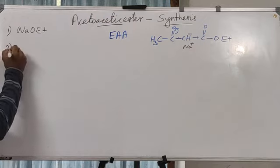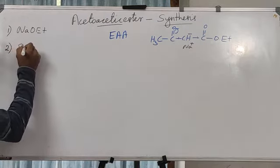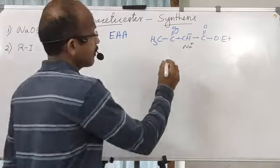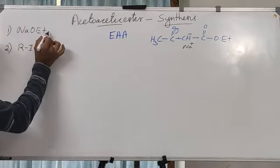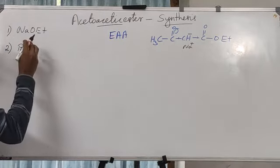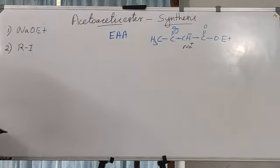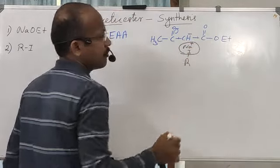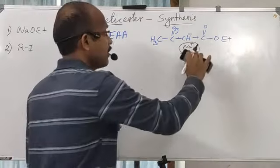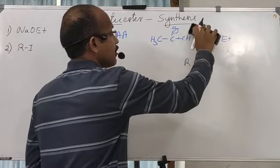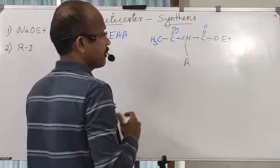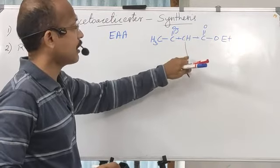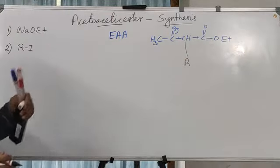After forming the sodium salt, treating with an alkyl iodide eliminates sodium iodide and forms a new C–C bond, introducing an alkyl group at the active position. This is the alkylation step — carbon-carbon linkage is generated at the active methylene position.